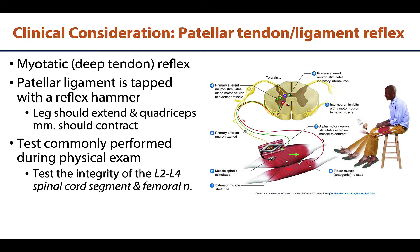For a clinical consideration, the patellar tendon reflex — also called the knee jerk — involves tapping the patellar ligament with a reflex hammer. This should elicit a jerky extension of the knee. Tapping that region activates muscle spindles in the quadriceps femoris, sending afferent impulses through the femoral nerve to the L2 through L4 segments of the spinal cord. Efferent impulses are then transmitted via motor fibers in the femoral nerve back to the quadriceps, resulting in that extension movement.